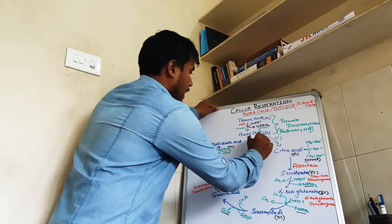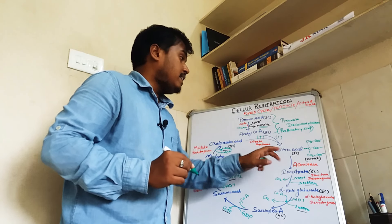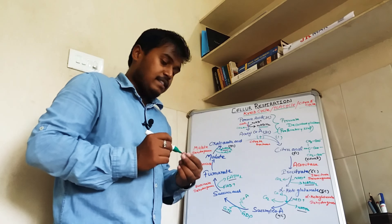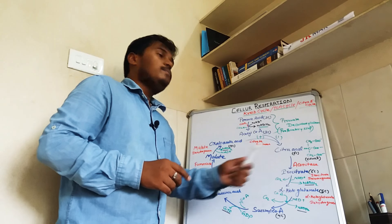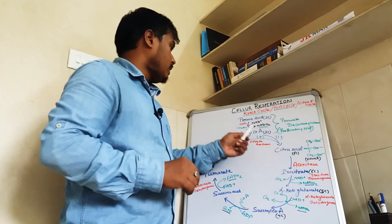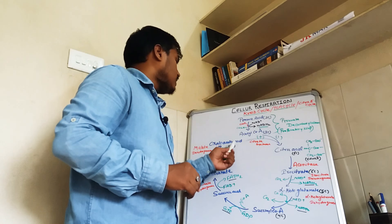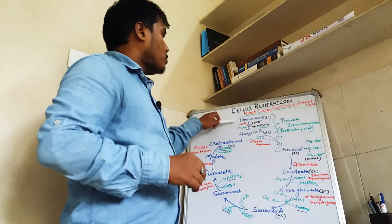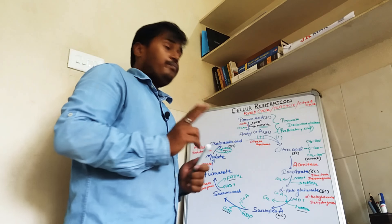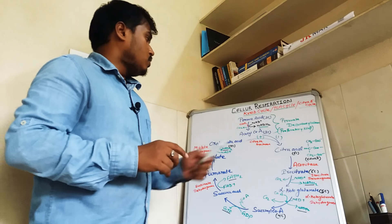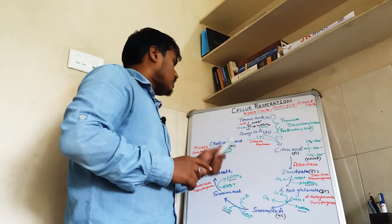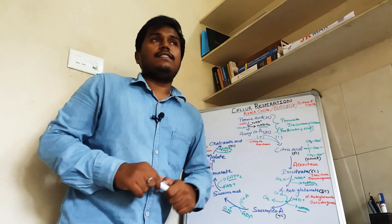Citric acid is formed when oxaloacetic acid, a four-carbon compound, combines with acetyl CoA, a two-carbon compound. Acetyl CoA is two carbons because pyruvic acid is three carbons and one CO2 is released. So two-carbon acetyl CoA plus four-carbon oxaloacetic acid gives us citric acid, which is a six-carbon compound.